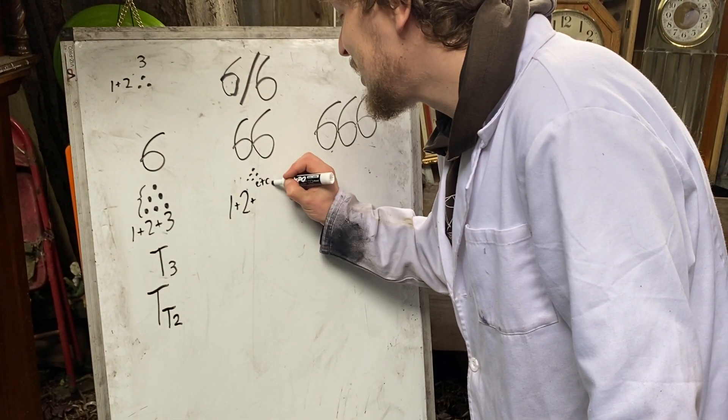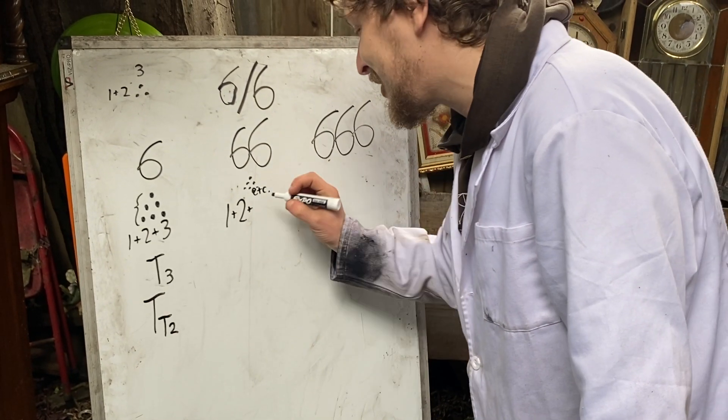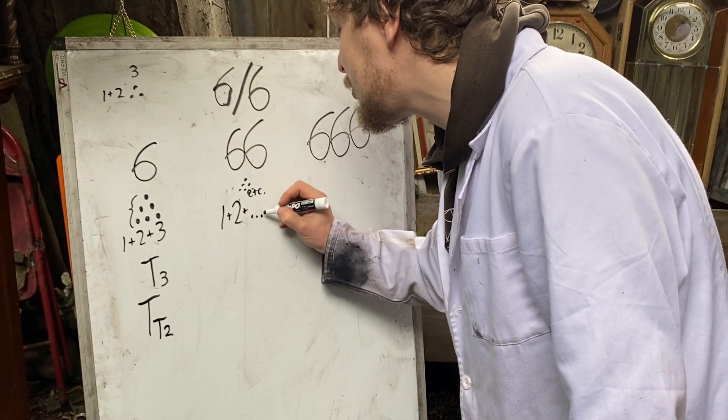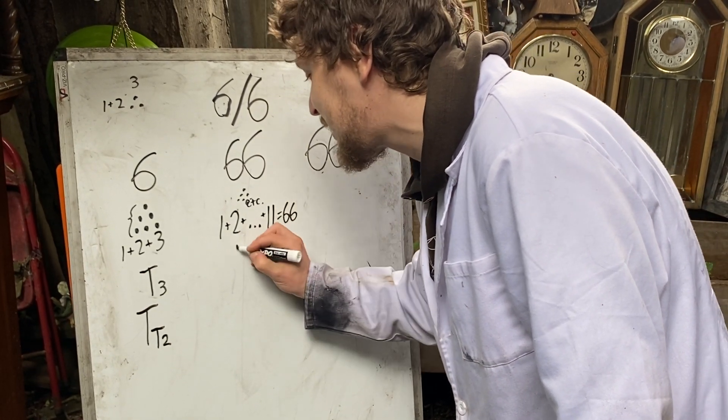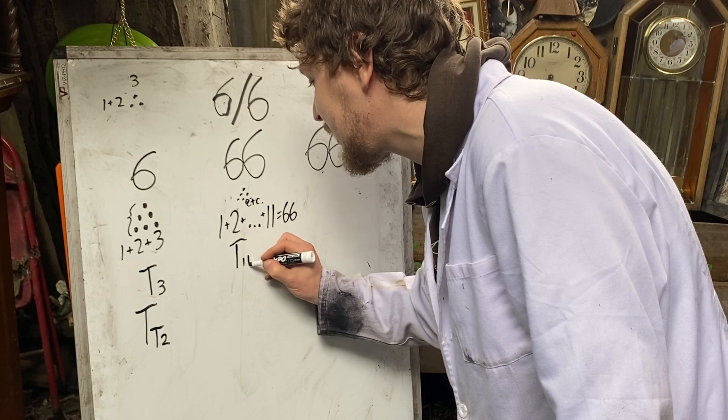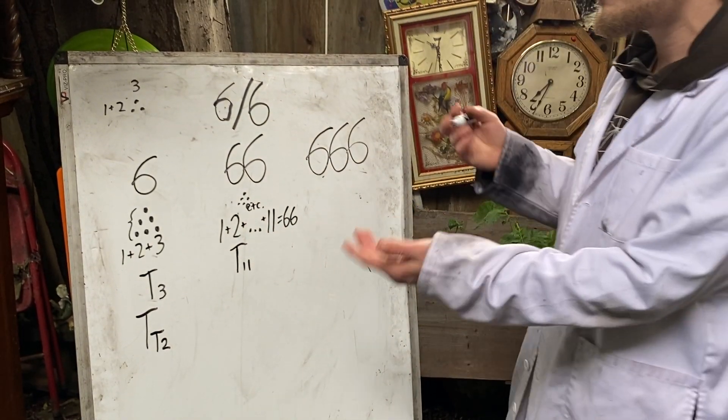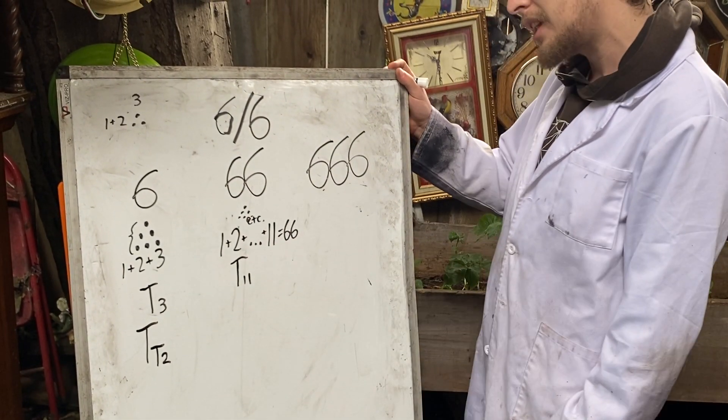It is triangular. We can add up one through eleven, and it equals 66. We could say it's T11, the eleventh triangular number, or the sum of the numbers from one through eleven.